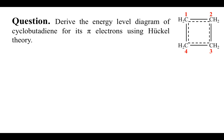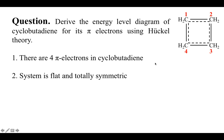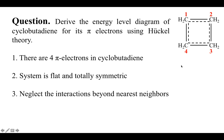The question is asking to derive the energy level diagram of cyclobutadiene for its pi electrons based on Hückel molecular orbital theory. As you can see on the right hand side, the structure of cyclobutadiene is shown. There are three main assumptions to solve this question: because it has two double bonds, we assume there are four pi electrons in the system. The second assumption is that the system is flat and totally symmetric, meaning all four sites — one, two, three, four — are equivalent.